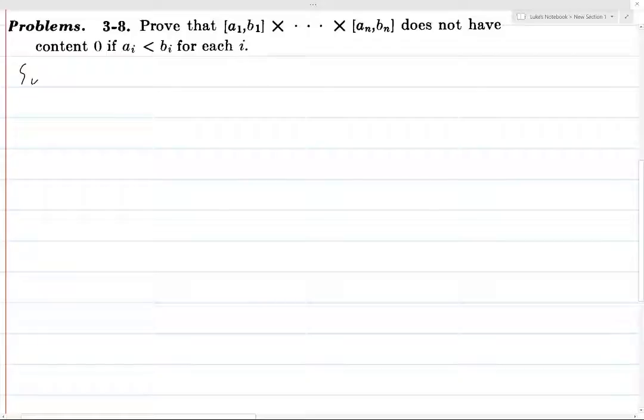Okay, so we're going to suppose that U1 through Um is a finite cover. And then the way we'll write this is just the direct product from i equals 1 to n of ai, bi. That's a1, b1 cross all the way through an, bn.